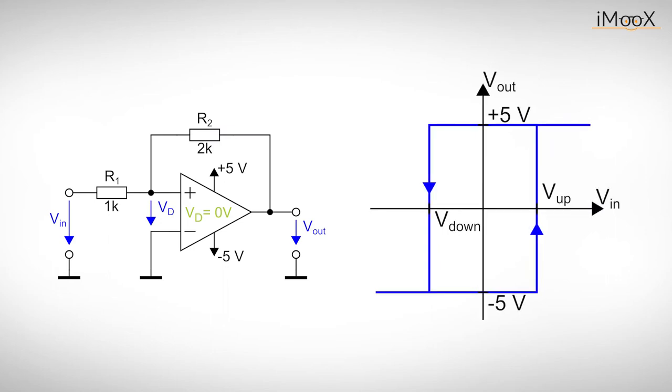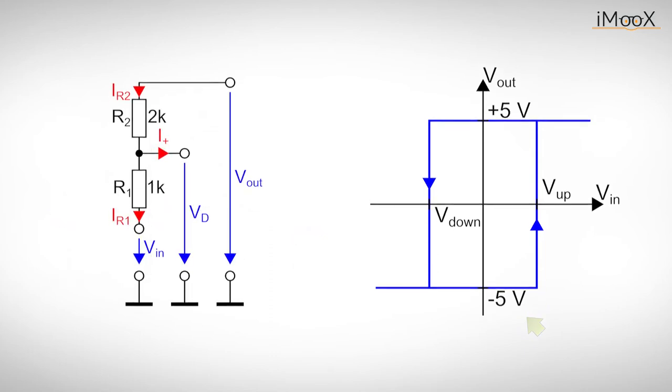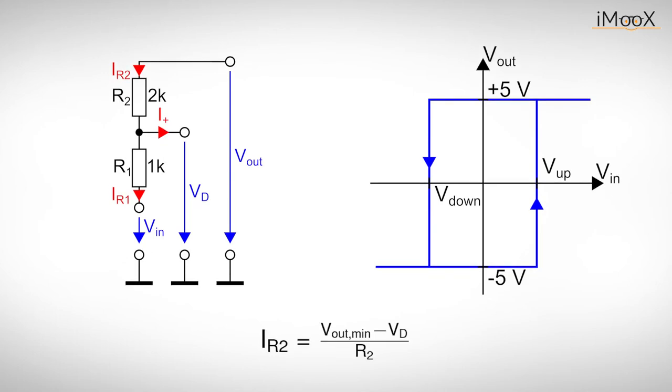Back to our example. We require V_d to be 0 volts to toggle the output of our Schmitt trigger. We also know that the output voltage is currently minus 5 volts. The rest is just a simple resistor circuit. The current I_R2 equals V_out min minus V_d divided by R2. As V_d is 0 volts at the trigger point, we can simplify the equation. As the current into the non-inverting input is a property of the operational amplifier, I plus equals 0 amps is still valid. Thus the currents through the resistors are equal, and we can determine the voltage drop at R1 by this expression. Thus we get this equation for the trigger level.